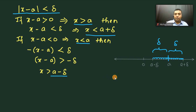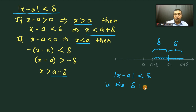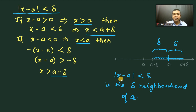One important observation: in this definition, x can take the value a. Because if x equals a, then x minus a will be 0, and 0 is naturally less than delta. Here it is assumed that delta is a positive value.